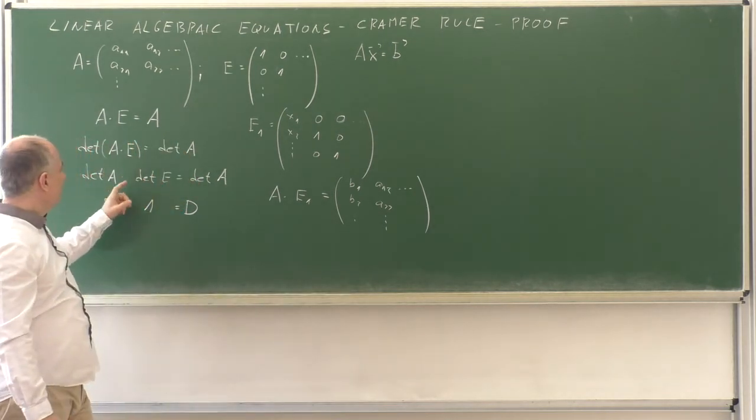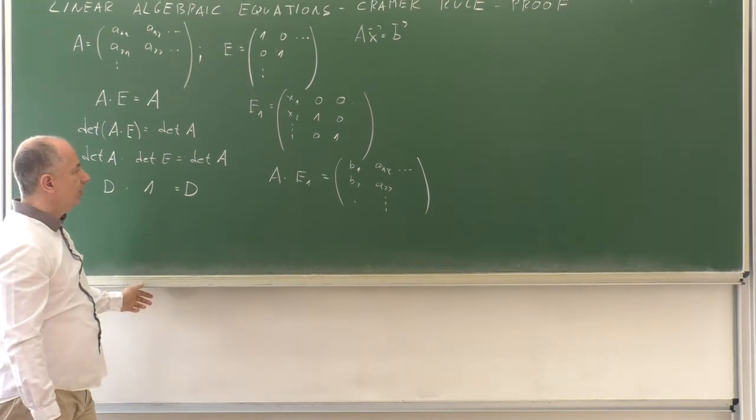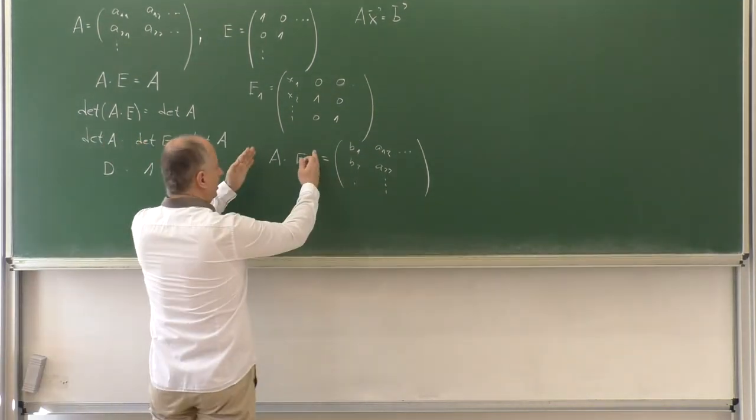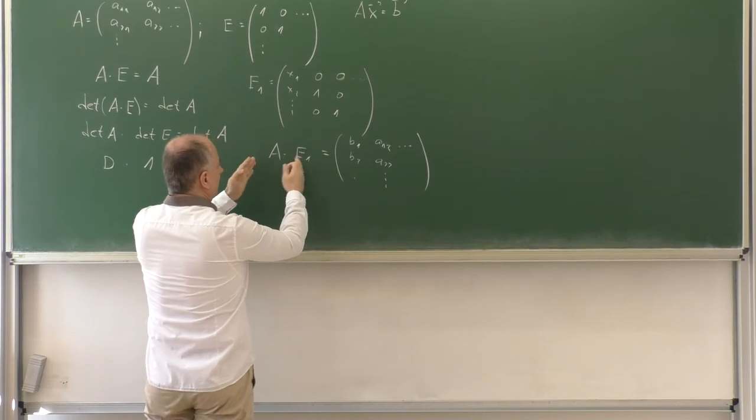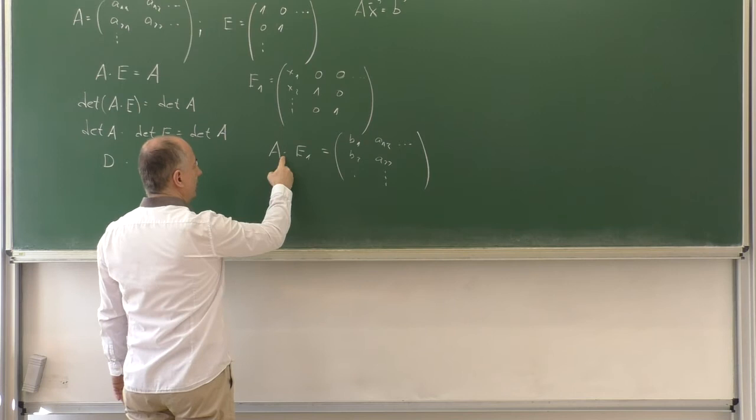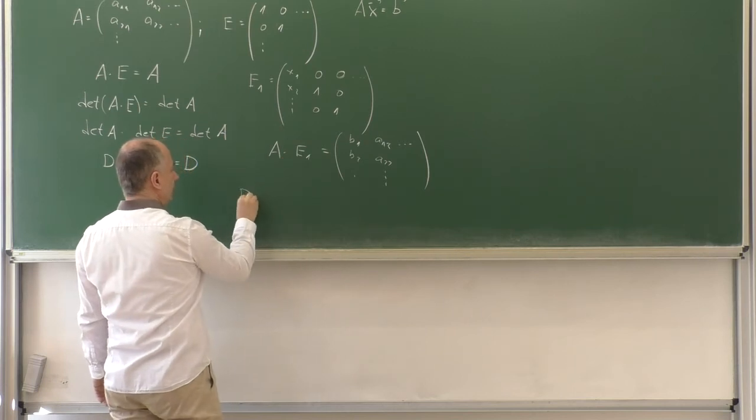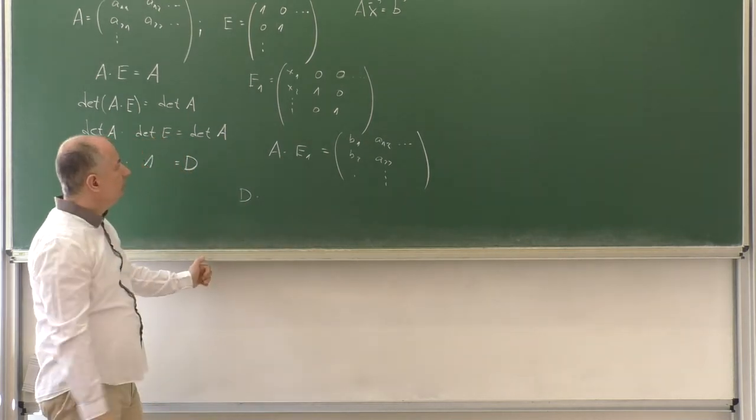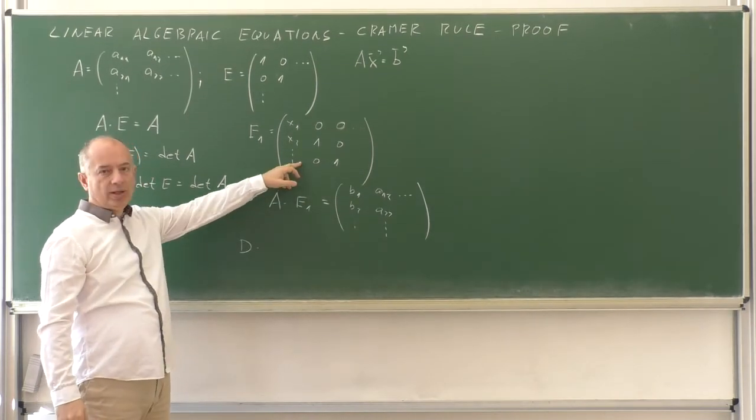And let's apply determinant to both sides. Determinant of this product is the determinant of the determinants. Determinant of A is G. And what is determinant of this matrix?